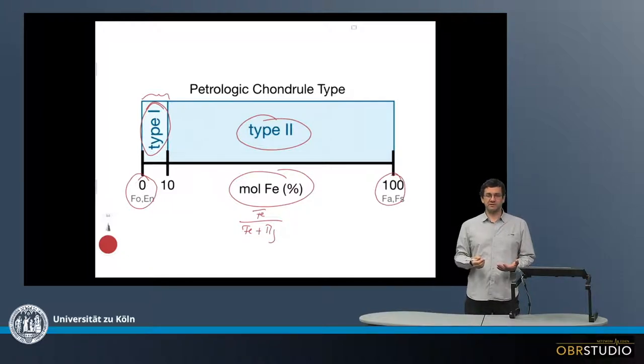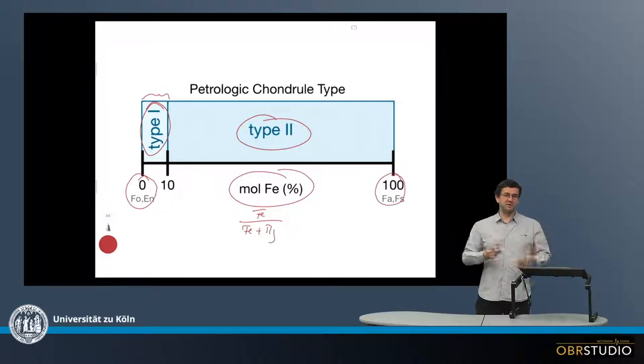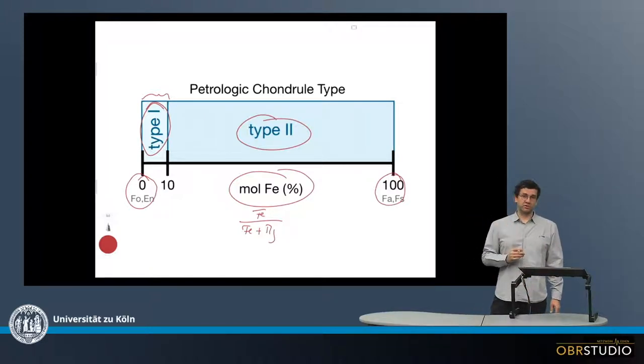For example, in carbonaceous chondrites, there's only a small fraction of type 2 chondrules. Most are type 1 chondrules, maybe around 95% or even more percent are type 1 chondrules.